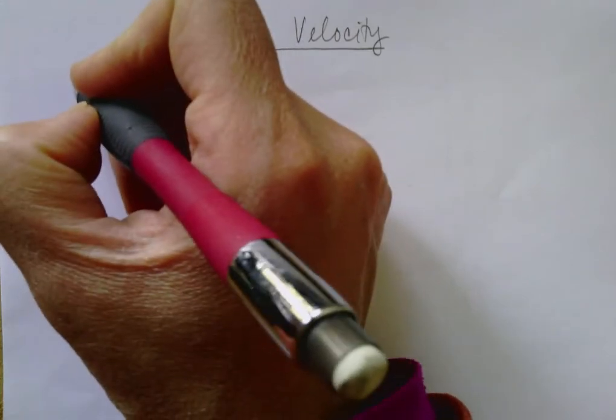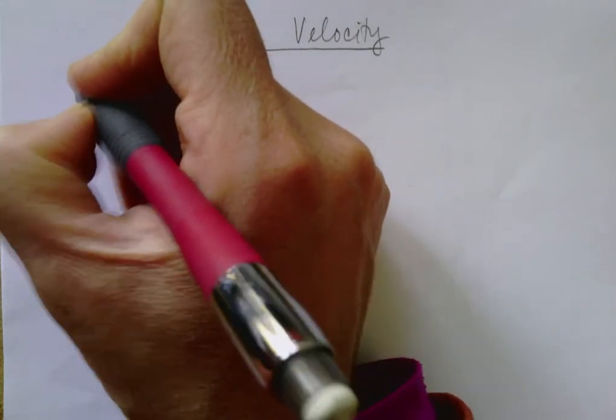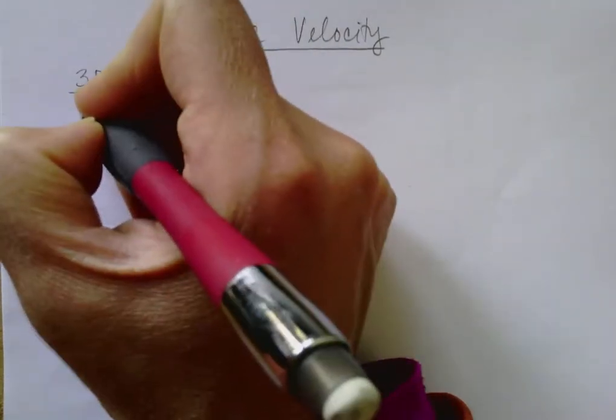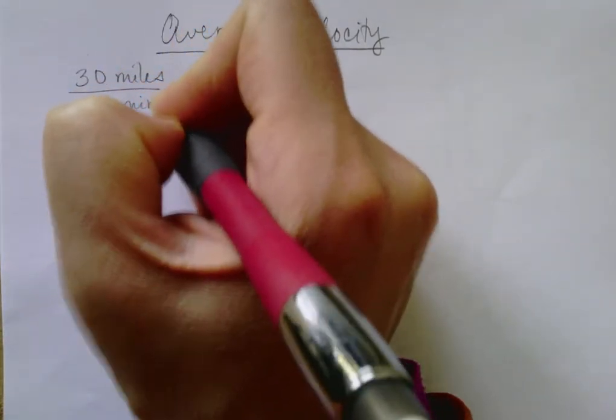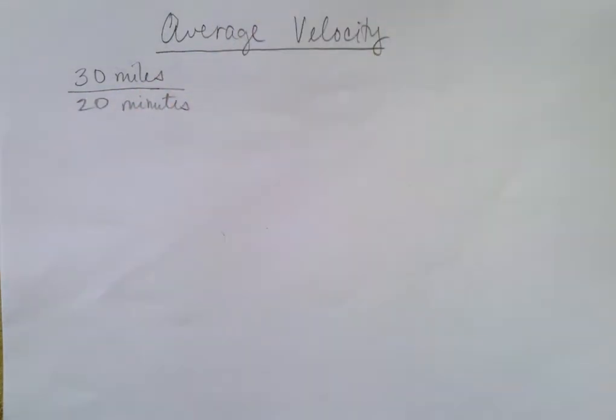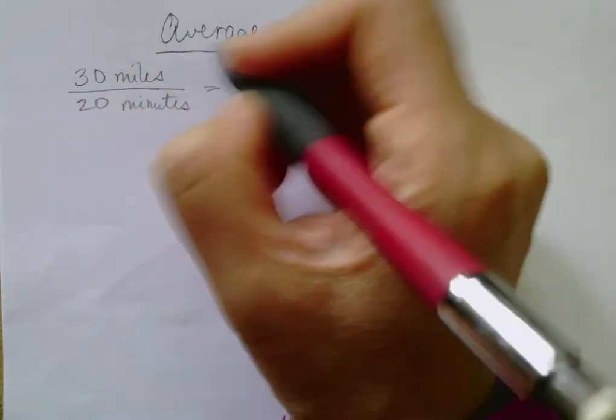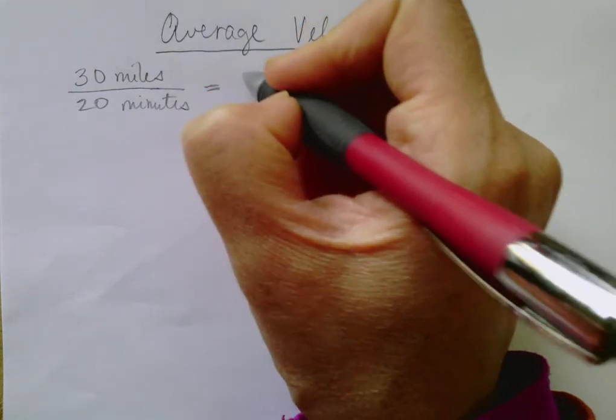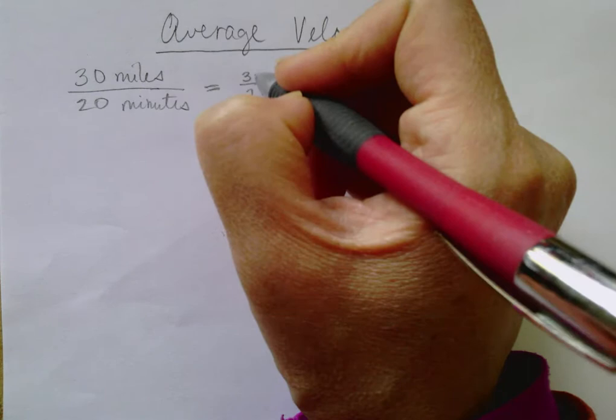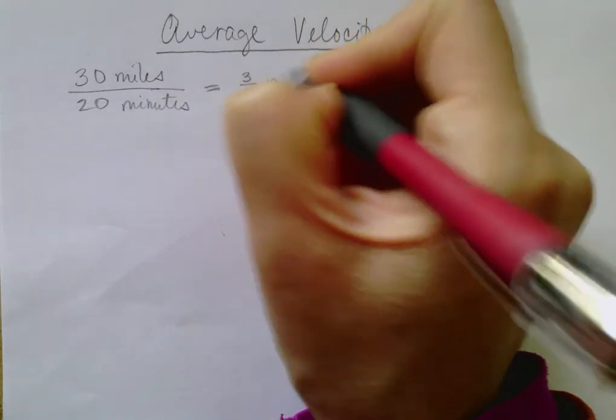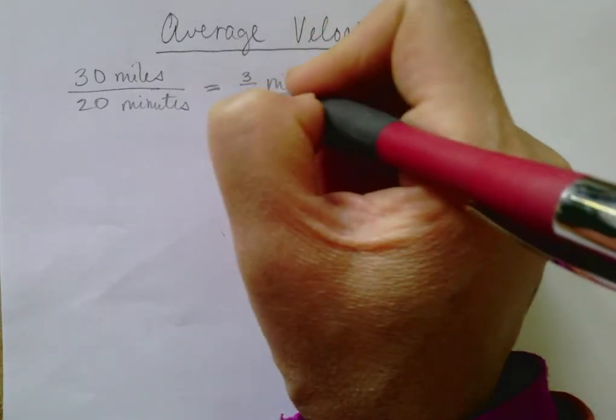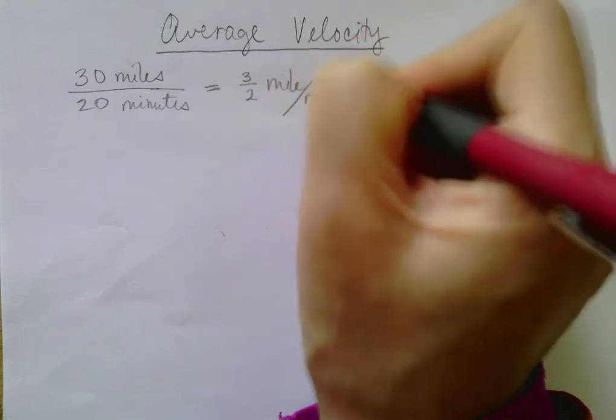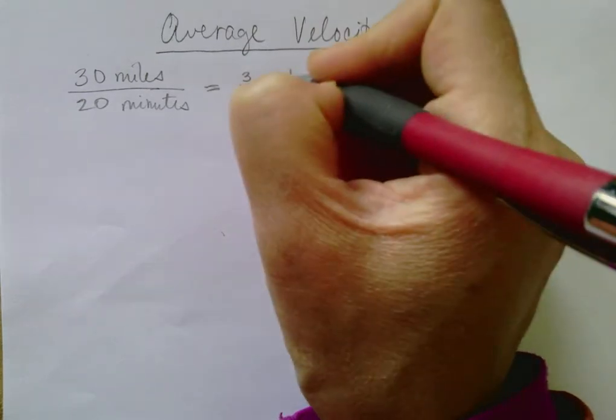Suppose you were traveling for 30 miles and it took you 20 minutes to get there, so you're driving pretty quickly. That means your average velocity over this time interval was three halves of a mile per minute. So one and a half miles per minute.